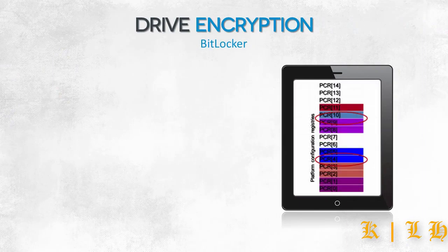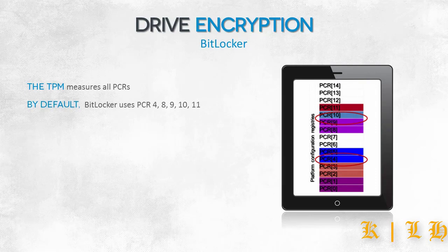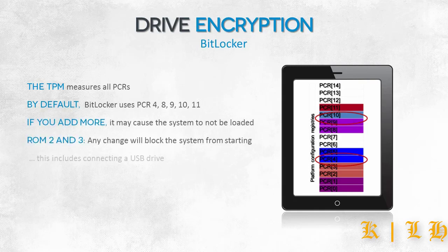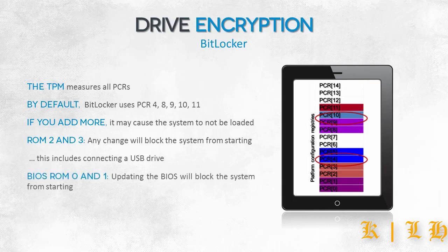Let's look at which storage registers are used by BitLocker. Registers 4, 8, 9, 10 and 11 are used by default. We can also ask for an additional check of the runtime registers — for example, the ROM memory register. We then risk that in the event of any changes to the memory, the checksum will not agree. We can also check the runtime register connected with the BIOS system. This would cause a situation where, when we want to update the BIOS system, we would first have to turn off the BitLocker encryption, otherwise the disk will not decrypt.